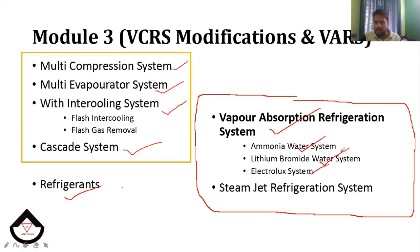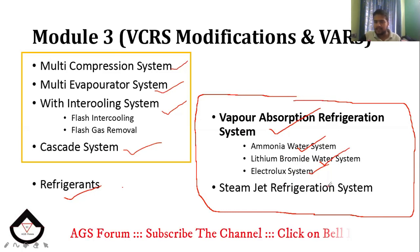VARS includes the Ammonia-Water system, Lithium Bromide system, electrolyte system, and Steam Jet Refrigeration System. In this section, we have two main things covered. Some portions here can be skipped.